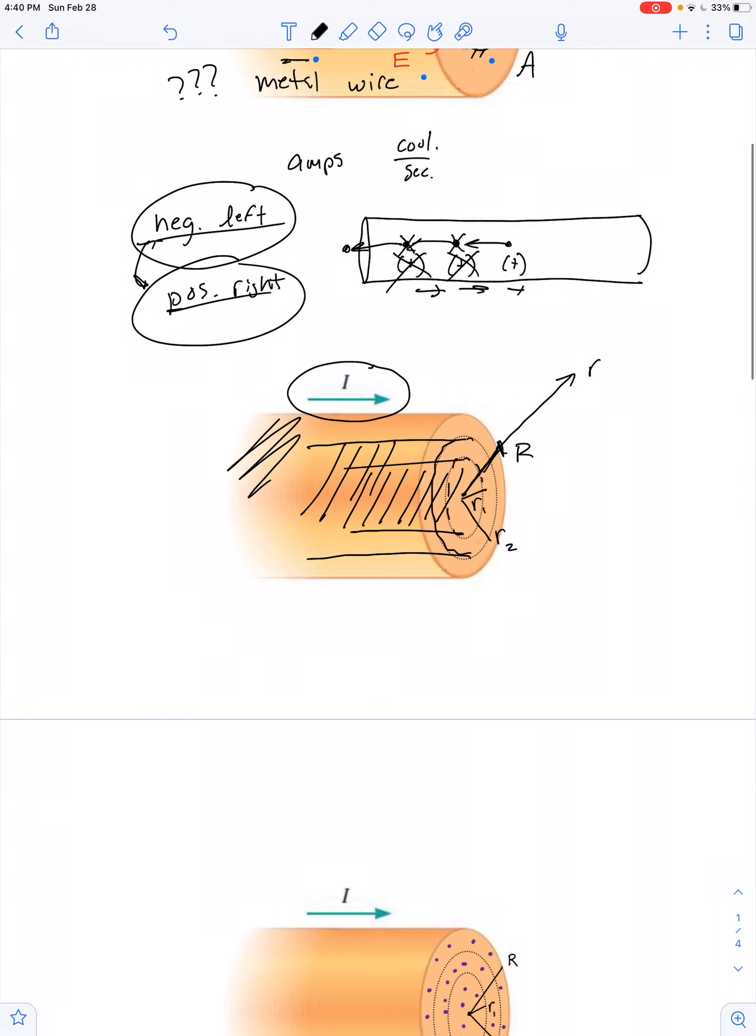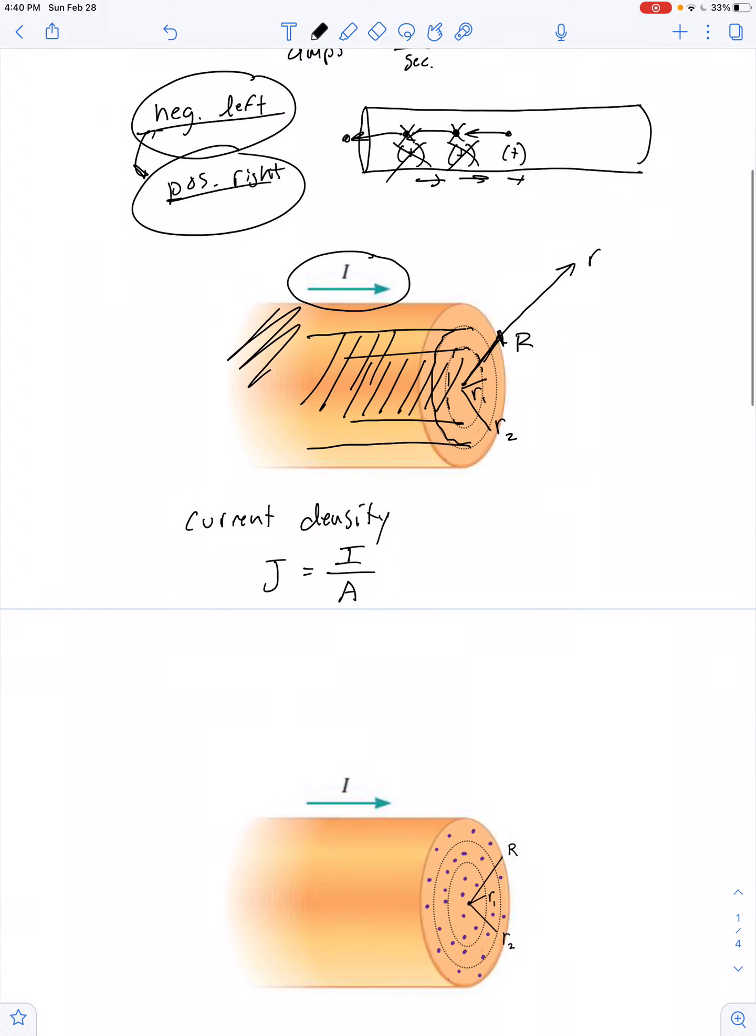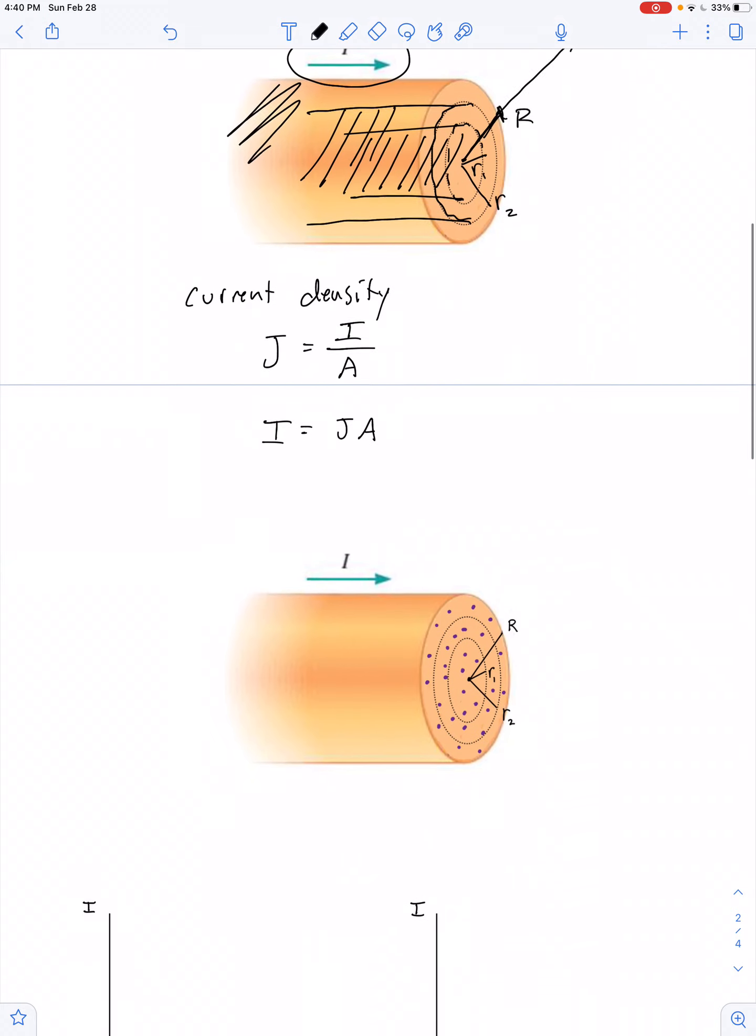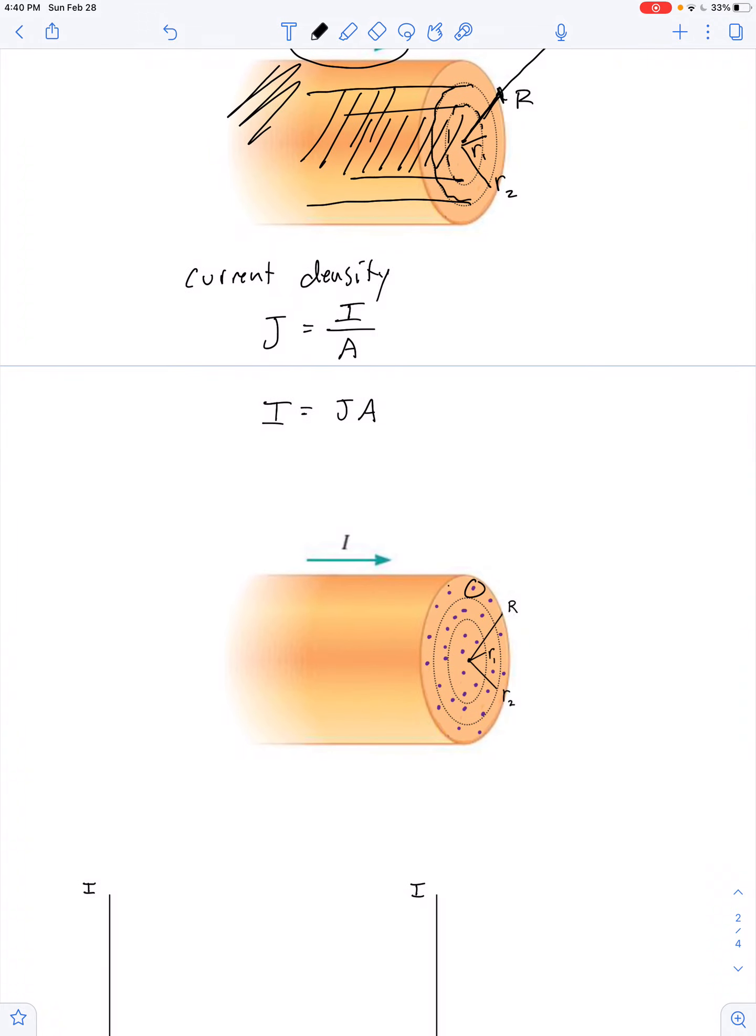So, now I want to talk about not so much current, but something we refer to as current density. We'll symbolize that with capital J. We say the current density is the current per unit area. Or, rearrange that, current is the density of current times the area. Yeah, so, if these electrons are uniformly distributed across the cross-sectional area that our eye sees when we look down the axis of this wire,